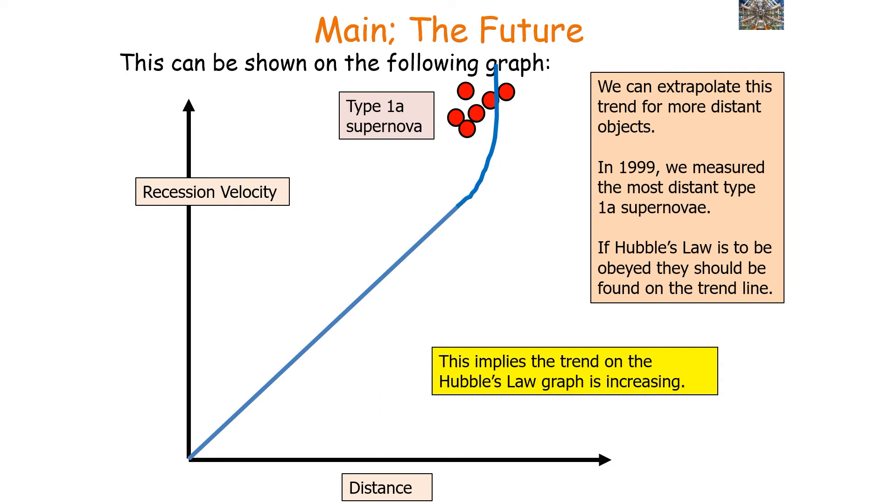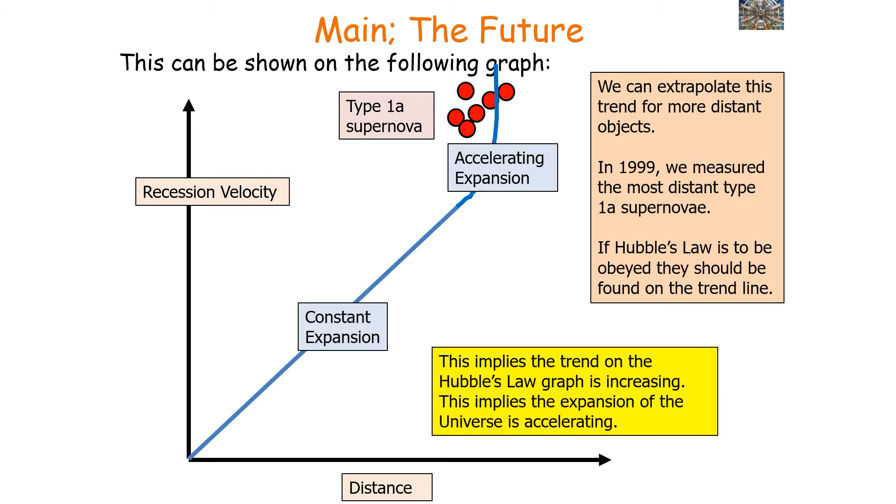So this implies that the trend on the Hubble's law graph is increasing, which implies that the expansion of the universe is accelerating. So whilst there is constant acceleration at one point in our universe, there is now accelerating expansion of the universe.